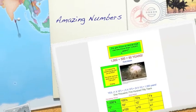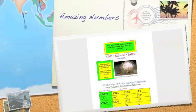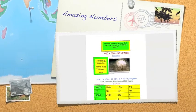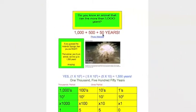Do you know an animal that can live more than 1,000 years? 1,000 plus 500 plus 50 years. If you guessed the Antarctic sponge, then you're right.